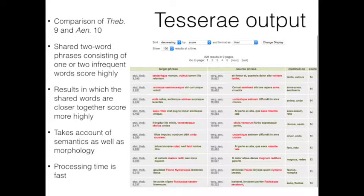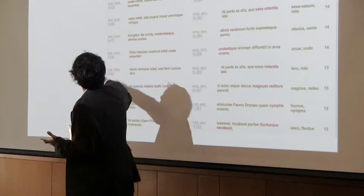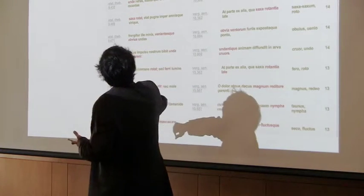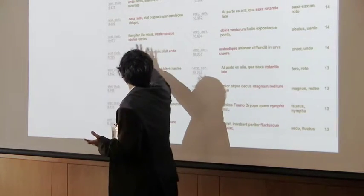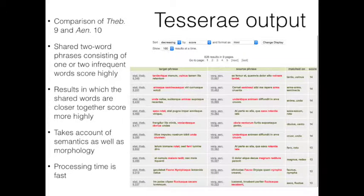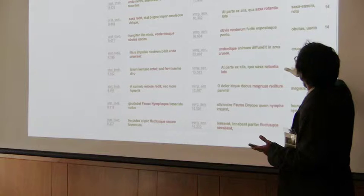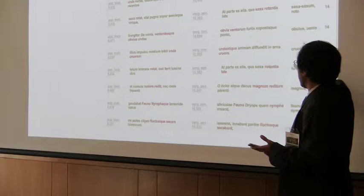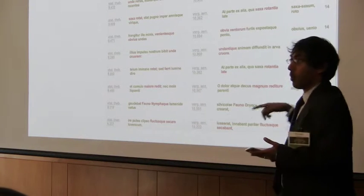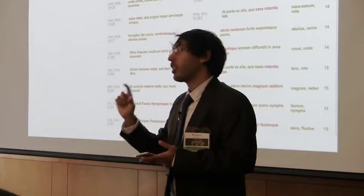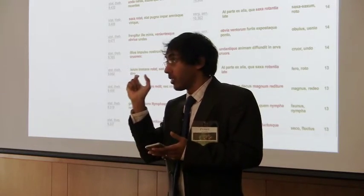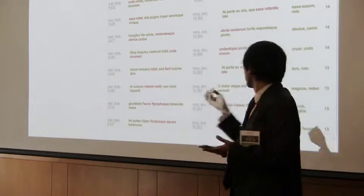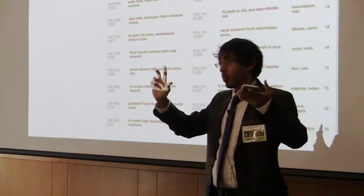Now this is what Tesserae output looks like. I don't want you to read the individual words. I just want you to get a quick visual picture of what the output looks like. You have the reference in your target text, the reference in your source text. And you can clearly see the line in question highlighted in red, the etymological or linguistic similarities. The particular words in the two-word phrase are set aside here. And then there's the score based on the metric of the relative infrequency of the word and a distance metric.